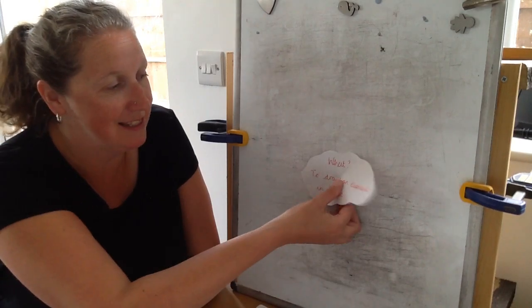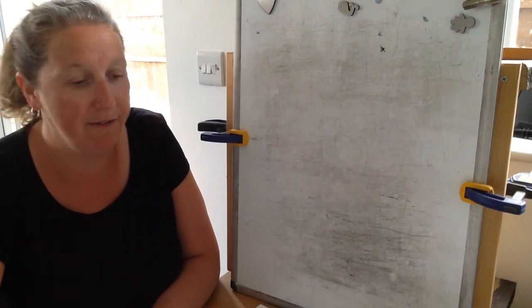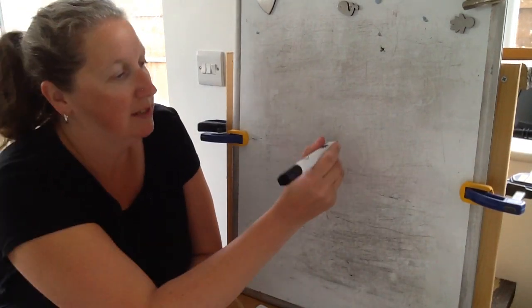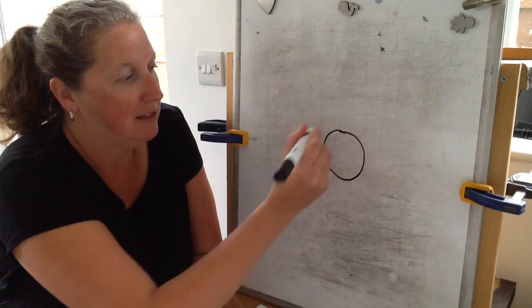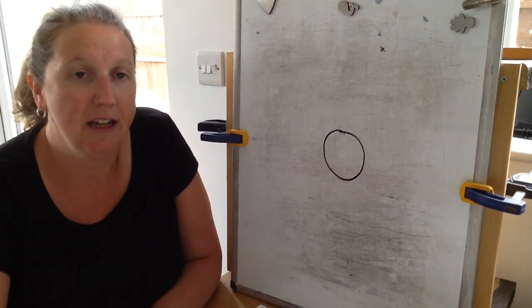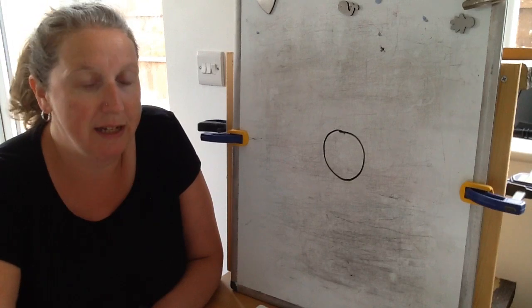Okay, so in seven steps we will draw an elephant. So our first step, step one, is to give our elephant a head, so I've done a circle for his head.